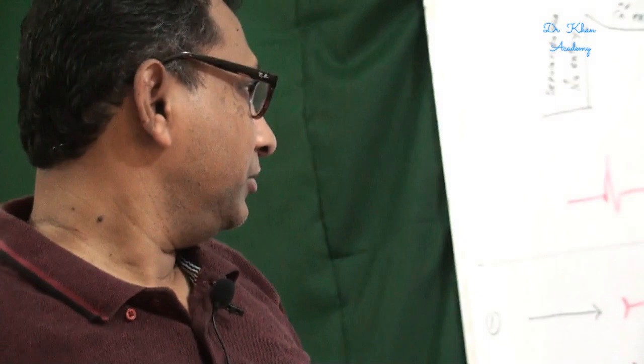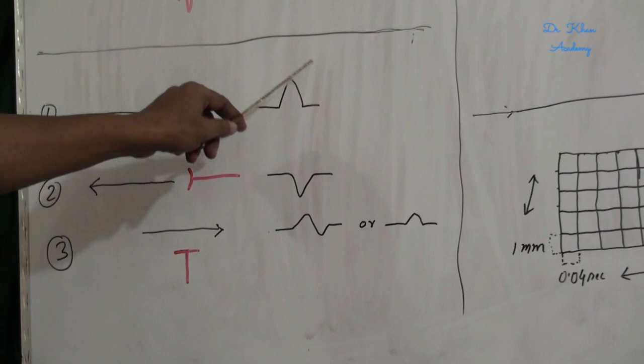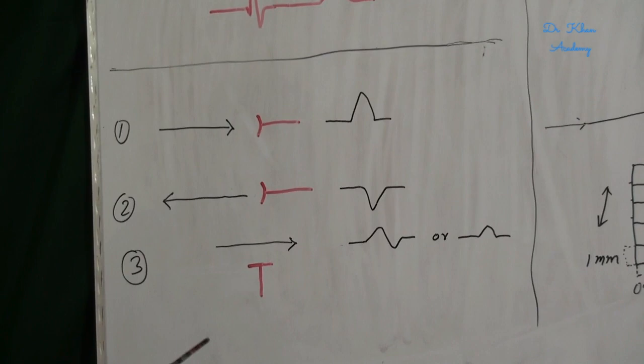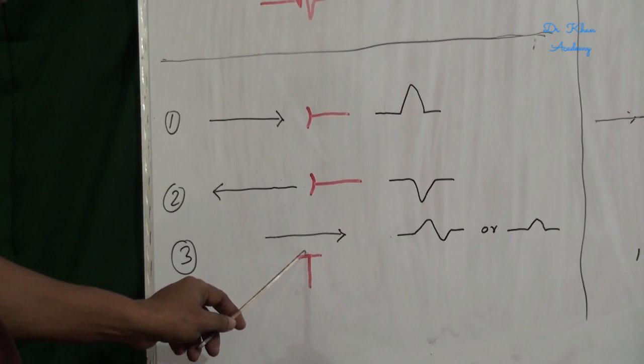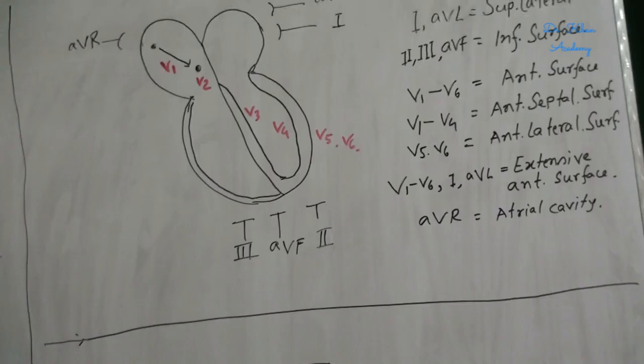Now the basic concepts of formation of waves in ECG. When an impulse passes towards an electrode, this electrode shows a positive wave. But when an impulse passes away from this electrode, this electrode shows a negative wave. And when an impulse passes at a right angle to this electrode, this electrode shows a biphasic wave or a small positive wave.